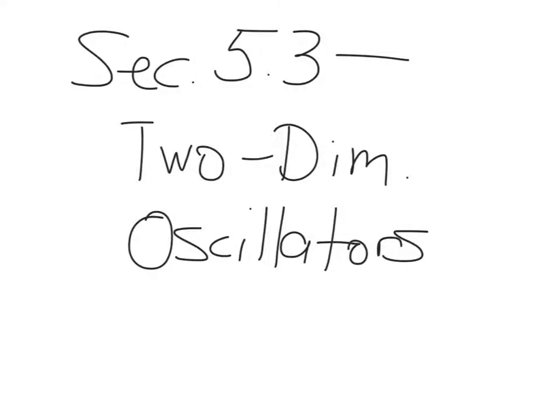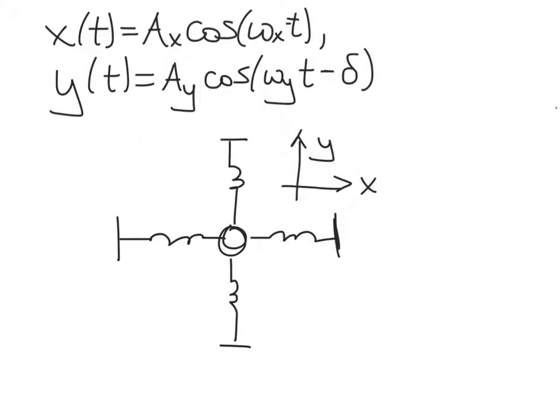In this section, we'll discuss two-dimensional harmonic oscillators. This section addresses systems that resemble something like this. Here we have springs along the x and y directions. Those springs might have different force constants — for instance, the springs along the x direction might be stiffer than the springs along the y direction. And so this mass in the center is going to oscillate around x and y in a simple harmonic way.